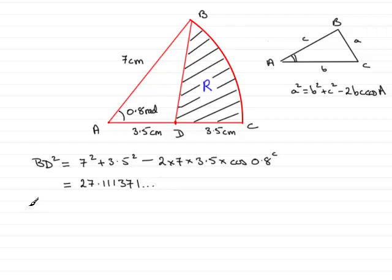Then to get BD, you need to square root this answer, and if you square root that, you get 5.206858, and so on.